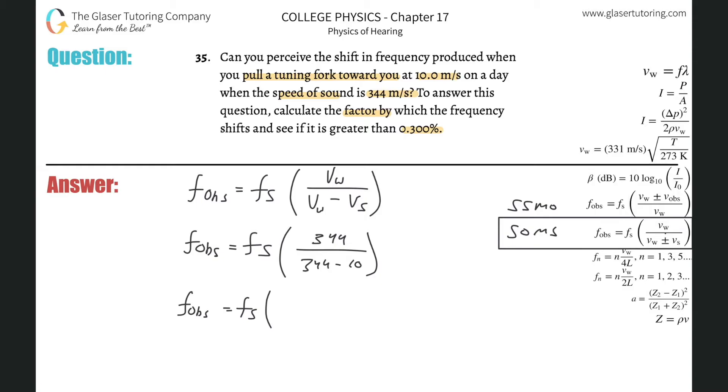What this tells us is if I get all these unknown variables onto the left-hand side, the frequency of the observer relative to the frequency of the source equals 1.03 times larger than the source.